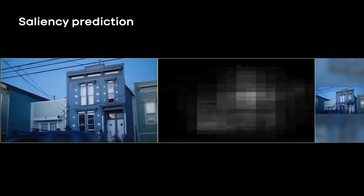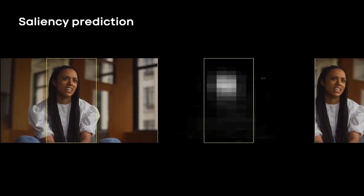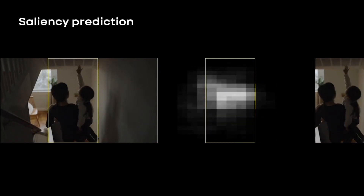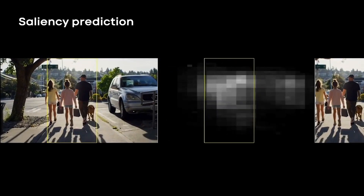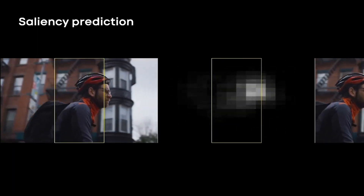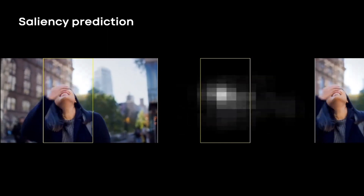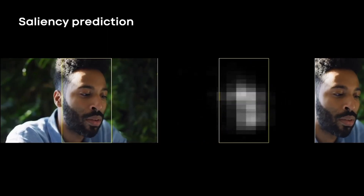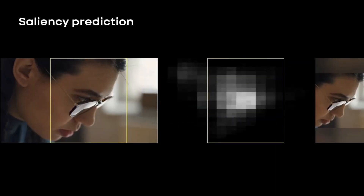Let's look at this video. On the left is the 16 by 9 source video. In the middle is the predicted saliency map, also known as the attention distribution. On the right is the 9 by 16 result. The saliency map describes the probability of where an average person would first look at the image. It is generally related to high contrast areas in the spatial, temporal, and frequency domains, and is sometimes also correlated with high-level features such as people's faces, hands, and interesting objects in the scene.